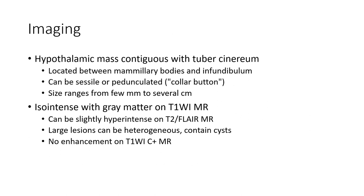On imaging, HH appears as a hypothalamic mass contiguous with the tuber cinereum, located between the mammillary body and infundibulum. It can be sessile or pedunculated with a collar-button shape. Size ranges from 2 mm to several cm. It is isointense with gray matter on T1-weighted MRI, can be slightly hyperintense on T2-weighted MRI, and shows no enhancement on T1-weighted MRI.